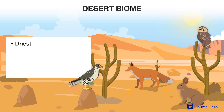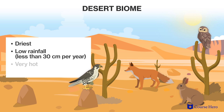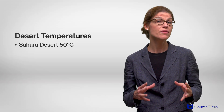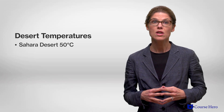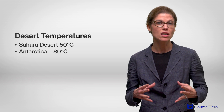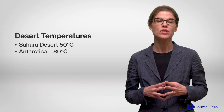Deserts are the driest of all biomes, characterized by low rainfall averaging less than 30 centimeters a year. Although most people tend to think of deserts as being very hot, deserts can also be very cold. For example, temperatures can exceed 50 degrees Celsius in the Sahara Desert, or they can be as low as negative 80 degrees Celsius in Antarctica, which is considered a desert due to its low rainfall.